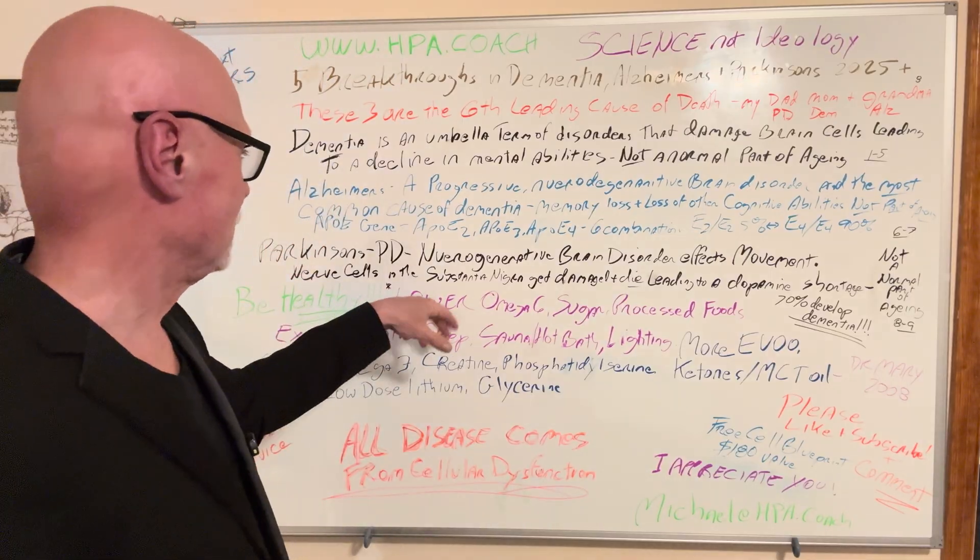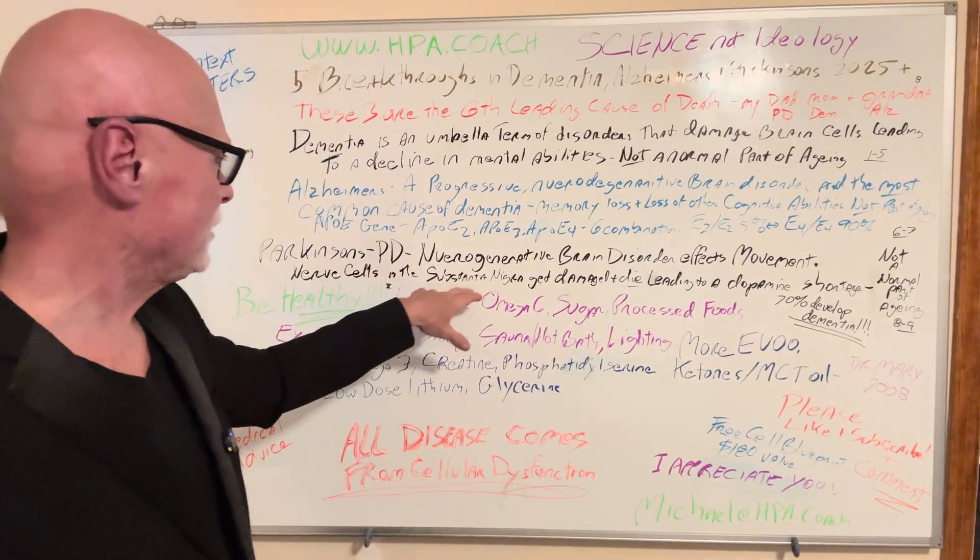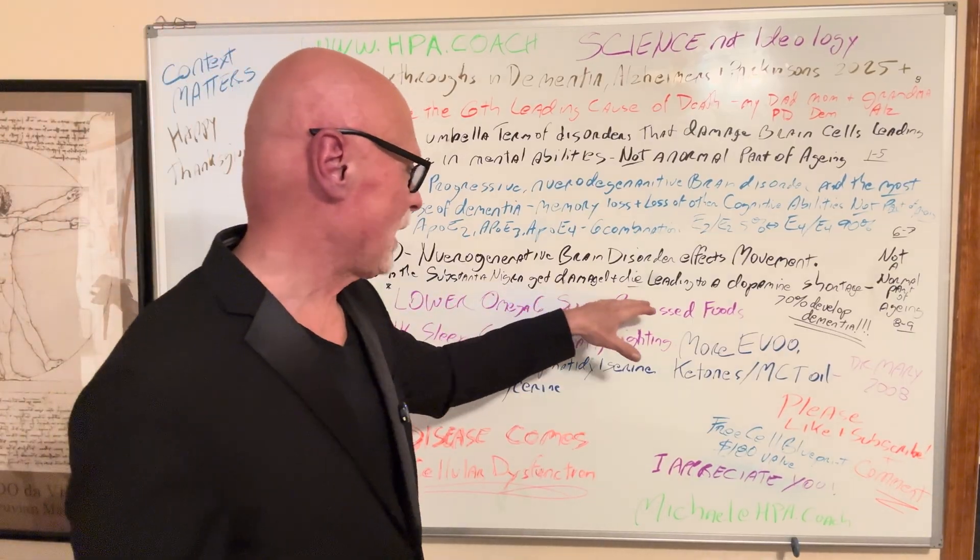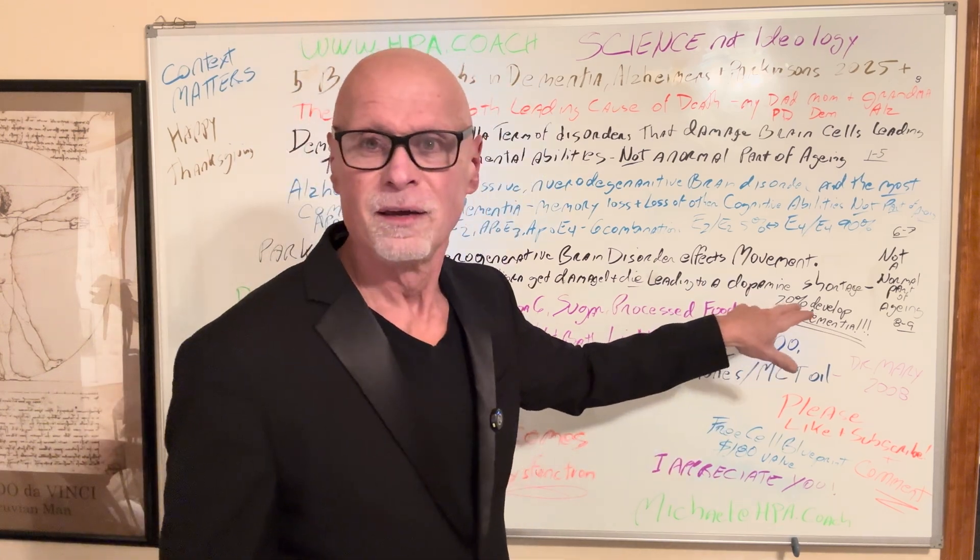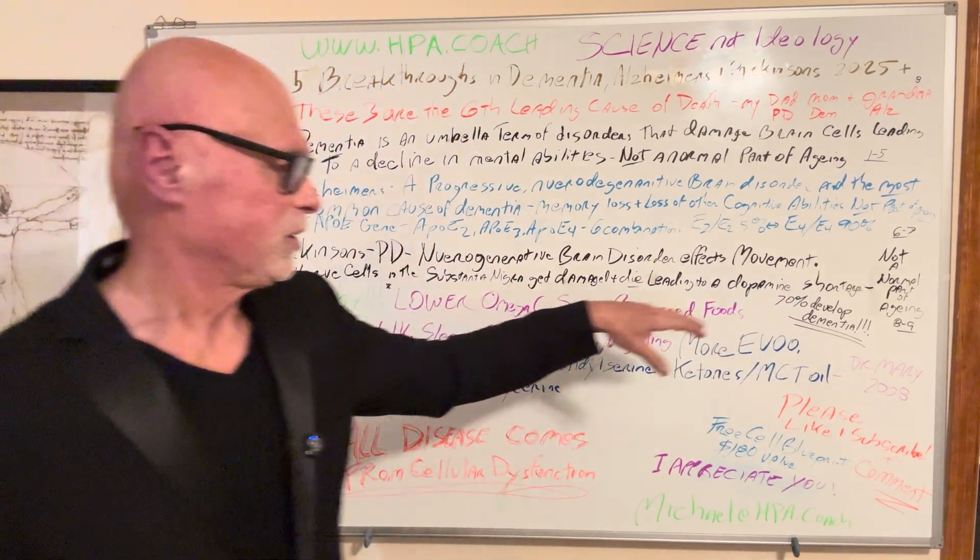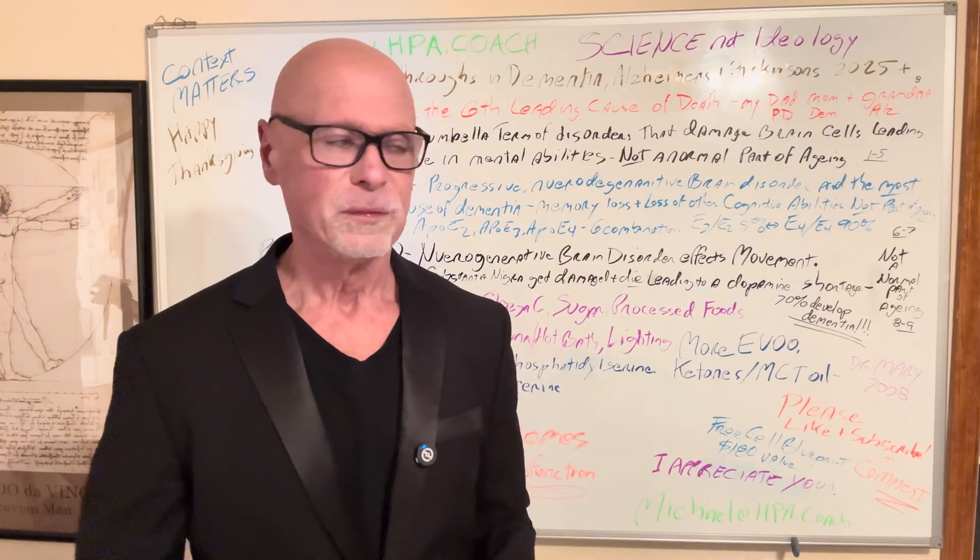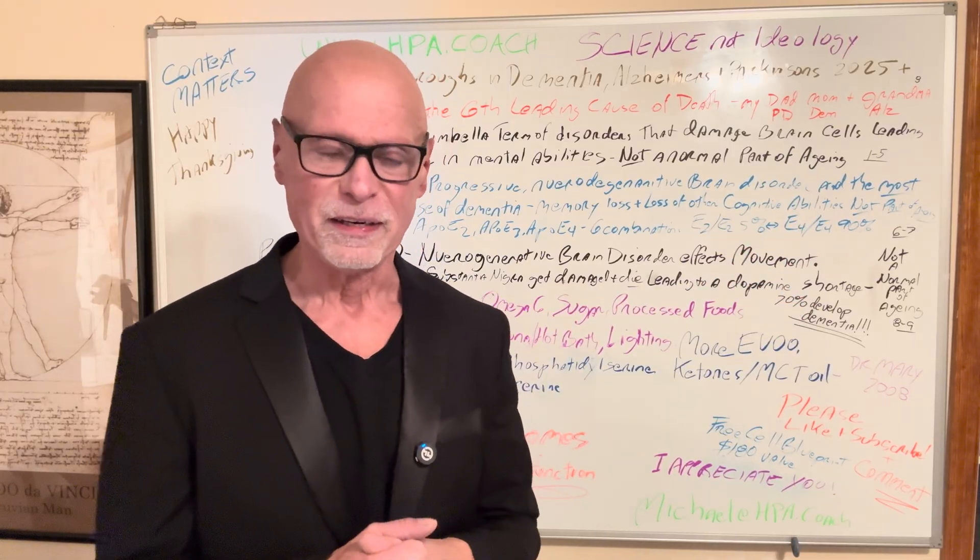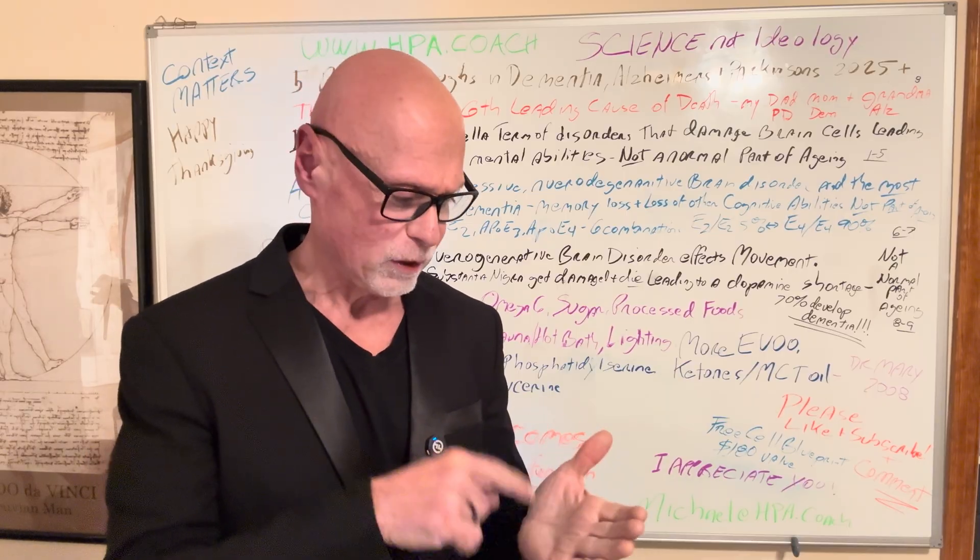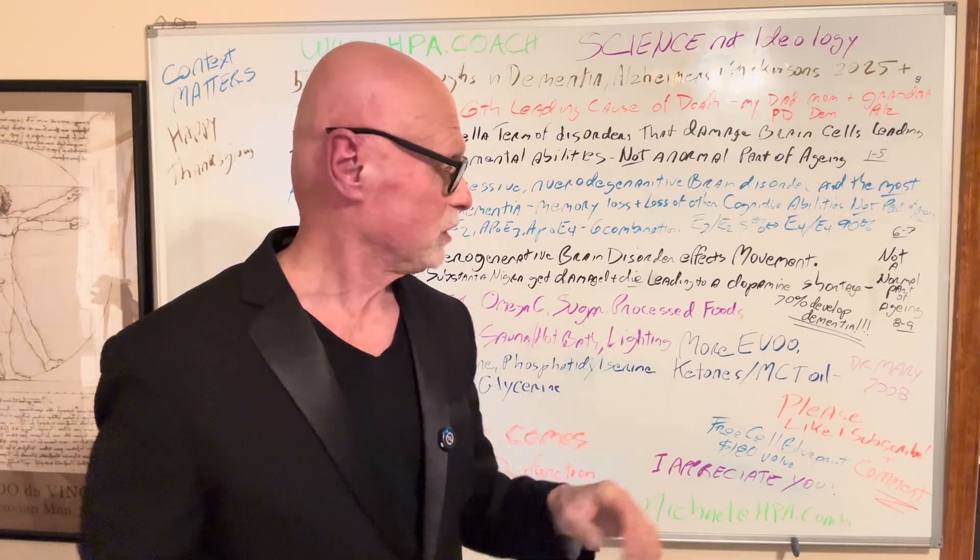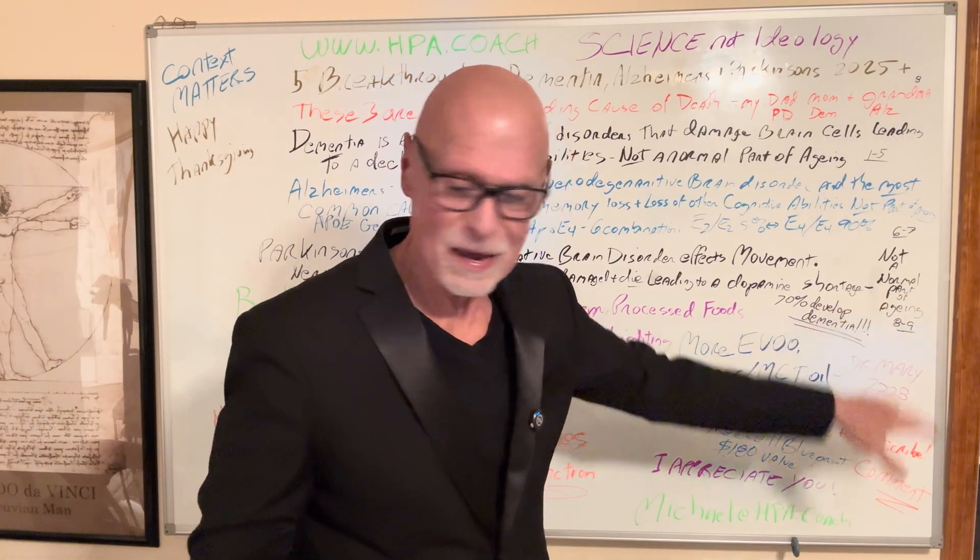Parkinson's, PD. Neurodegenerative brain disorder affects movement. 70% nerve cells in the substantia nigra get damaged and die, leading to a dopamine shortage. 70% of people with PD develop dementia. My father never developed dementia. He was sharp. He couldn't talk. He couldn't moan, and his wife understood him, but he could write on a board or he could pick out numbers, letters. So not a normal part of aging.